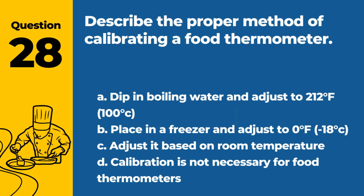Question 28. Describe the proper method of calibrating a food thermometer. A. Dip in boiling water and adjust to 212°F, 100°C. B. Place in a freezer and adjust to 0°F, -18°C. C. Adjust it based on room temperature. D. Calibration is not necessary for food thermometers. Answer: A. Dip in boiling water and adjust to 212°F, 100°C. Calibrating a food thermometer typically involves dipping it in boiling water and adjusting it to read 212°F, 100°C — the boiling point of water.